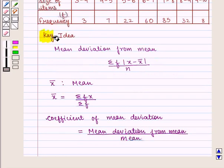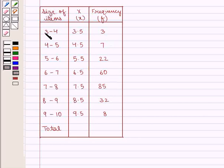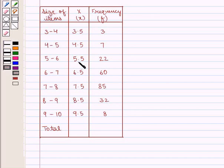With this key idea, let us proceed with the solution. We are given the following distribution of data where the size of items with the corresponding frequencies are given. The x series is found by taking the midpoint of each class interval: for 3 to 4 we take 3.5, for 4 to 5 we take 4.5, for 5 to 6 we take 5.5, for 6 to 7 we take 6.5, for 7 to 8 we take 7.5, for 8 to 9 we take 8.5, and for 9 to 10 we take 9.5.